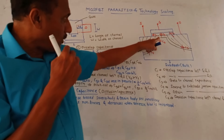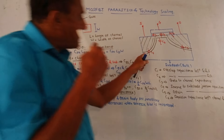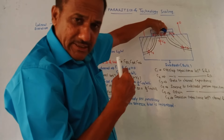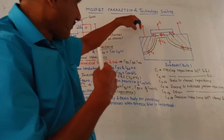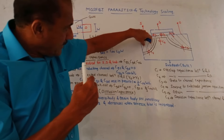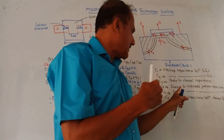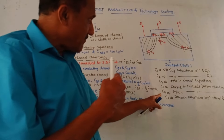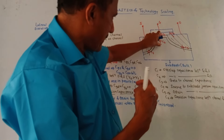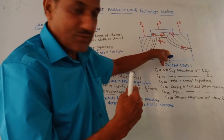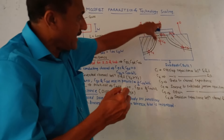Next is C3, which is gate-to-channel capacitance. The gate and the channel created between source and drain give rise to capacitor C3. C4 is the source-to-substrate junction capacitance — between the source region and the substrate there is capacitor C4. Similarly, C5 is the junction capacitance between drain and substrate. C6 is the capacitance between the channel and the substrate. These are the different parasitic capacitors existing in a MOSFET, and they affect the performance of the MOSFET.